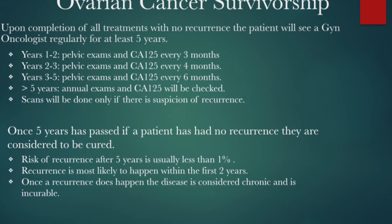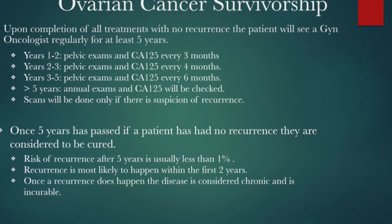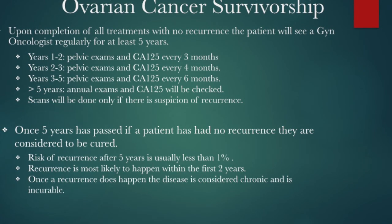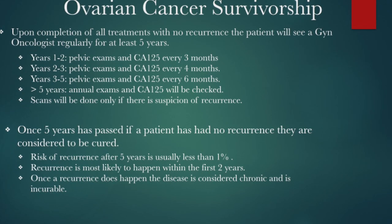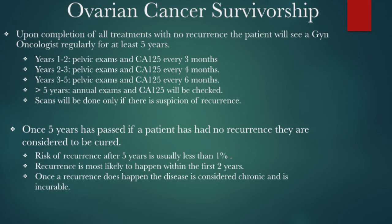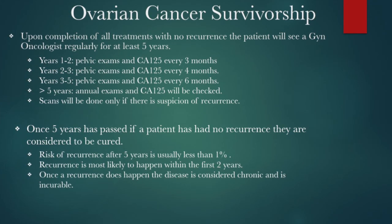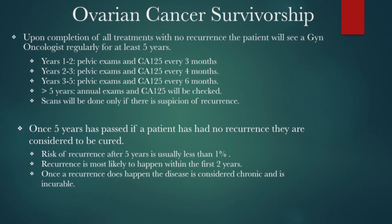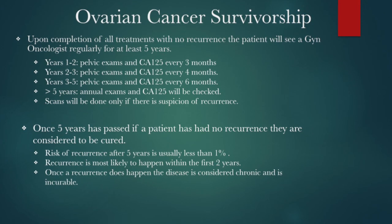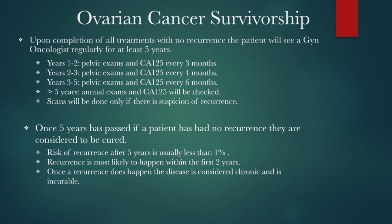The typical follow-up period upon completion of all treatments is five years. A CT or PET scan will be done once treatments are complete to ensure there is no residual cancer, but then scans will not be done as routine surveillance — only if there is a suspicion of recurrence. For the first three years, patients are monitored closely with pelvic exams and CA-125 blood tests every three to four months. Years three through five, patients will be seen every four to six months with the same exam and blood work. Once five years have passed with no recurrence, the patient is considered cured and their risk of recurrence drops to less than one percent. If an ovarian cancer is to recur, it will most likely happen within the first two years after completion of treatment. Once there is a recurrence, the disease is considered to be chronic and incurable.